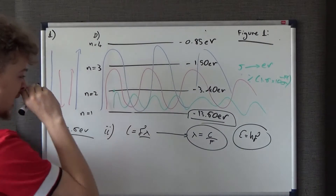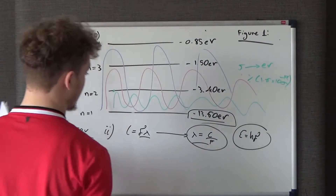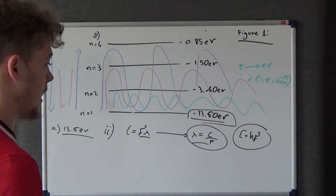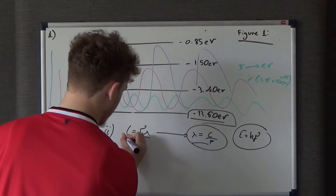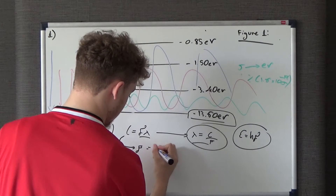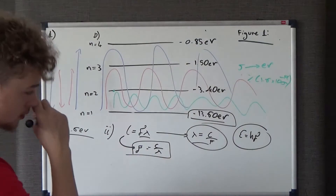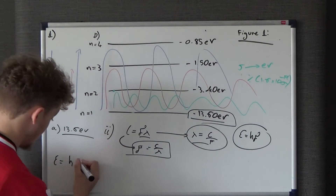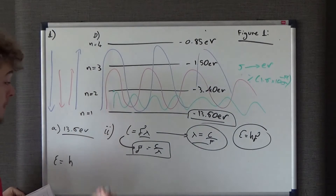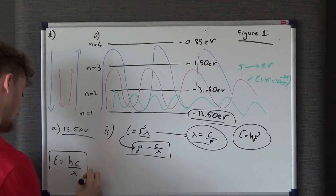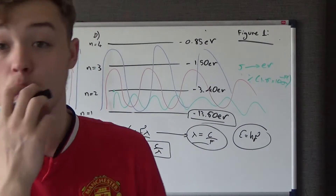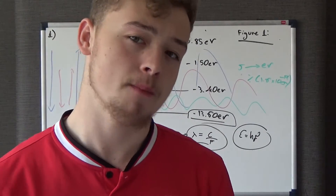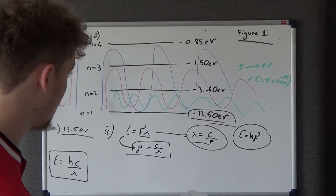Since E = hf and f = c/λ, we get E = hc/λ. We want to find λ, so we'll use this combined equation. Alternatively, you could find frequency first using E=hf, then convert frequency to wavelength using λ=c/f — but combining the equations is quicker. Either method is valid.